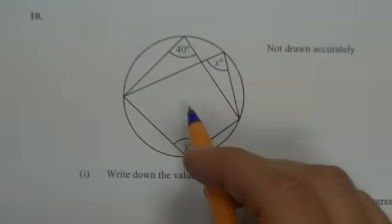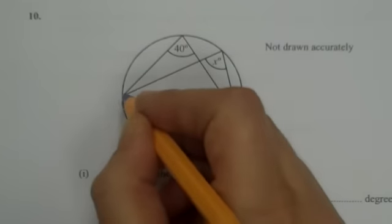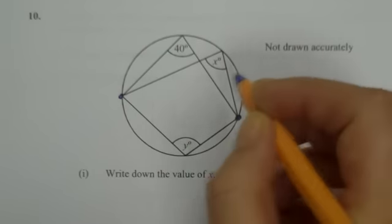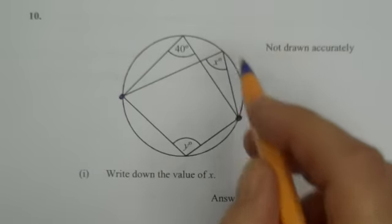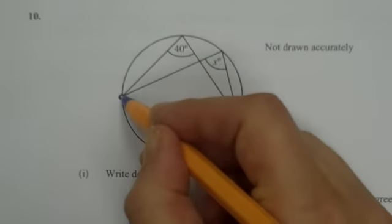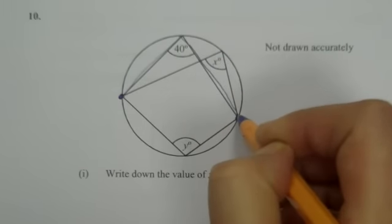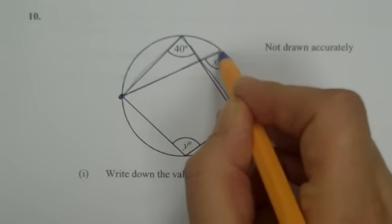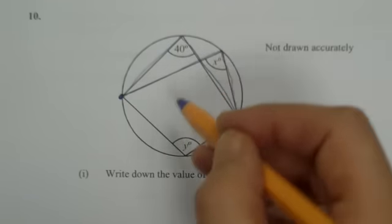And I'm looking now for Part A. It says, write down the value of x. Now if you take a look at this point here and this point here on this circle, coming from this point and this point, there's an angle going to the circumference there, and also there's an angle going to the circumference there, and they've been drawn into the same segment.